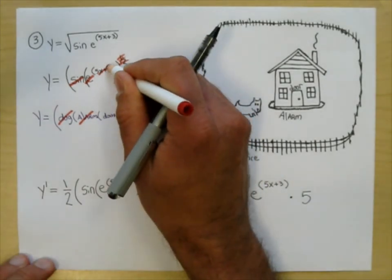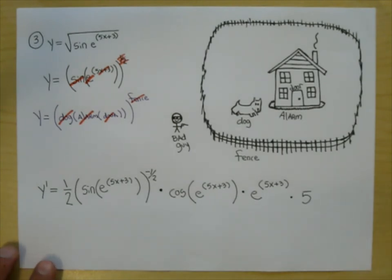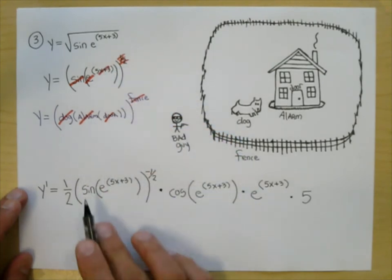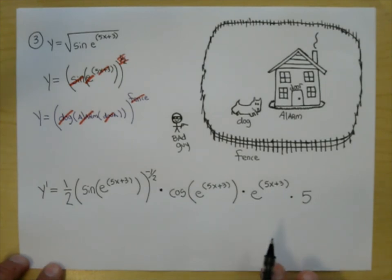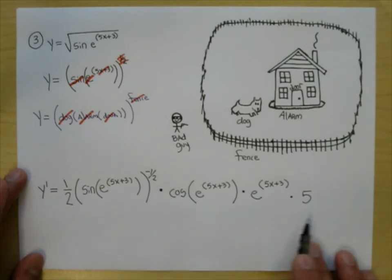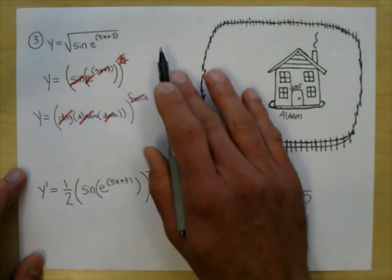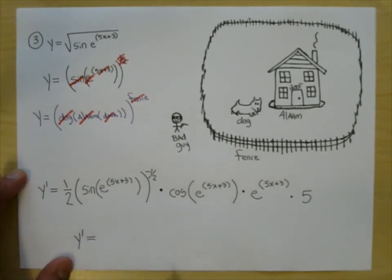That's the final answer. Think of it as peeling the layers off an onion — things are linked together through composition, which is probably why it's called the chain rule. Let's do more problems to see that this section is not as stressful as you might have thought. Let's do y equals 2x plus 1 cubed.